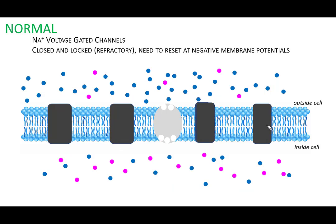Then once it gets really positive, the sodium voltage gated channels are closed and they became closed and locked. This is where they're locked. They're in a refractory period. They need the action potential to get way back down to the negative resting membrane potential so that they can reset and be ready to go again.